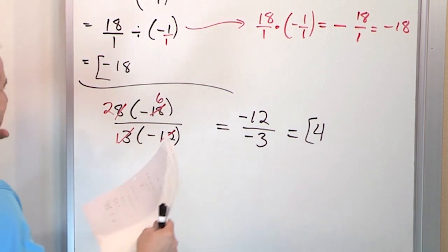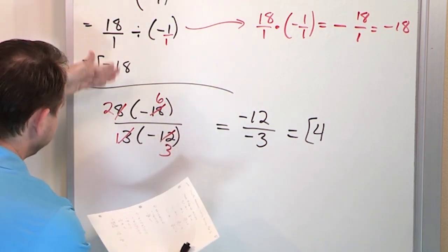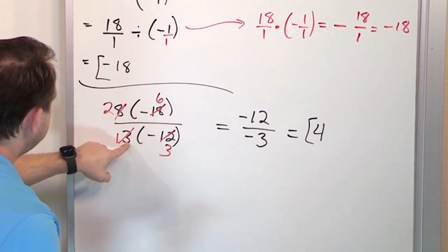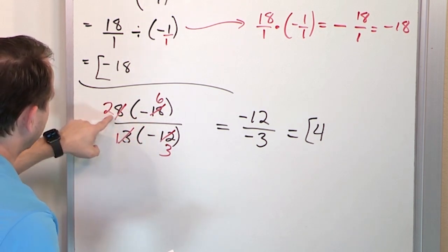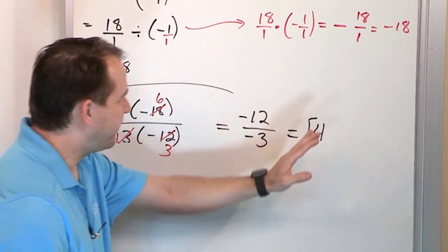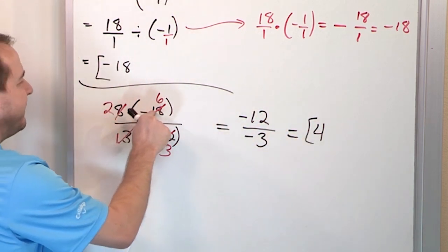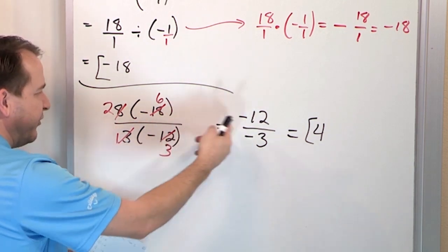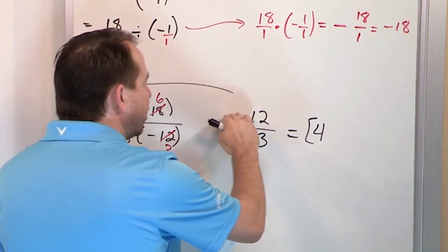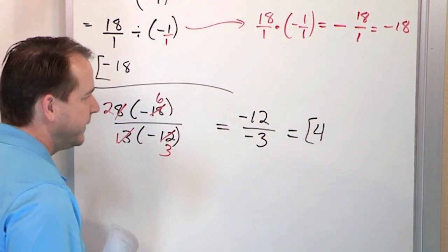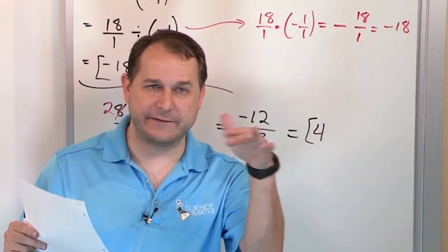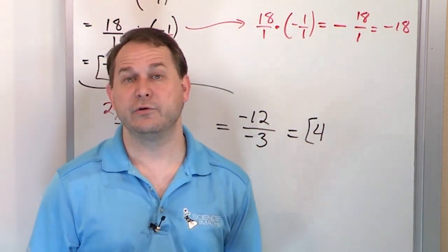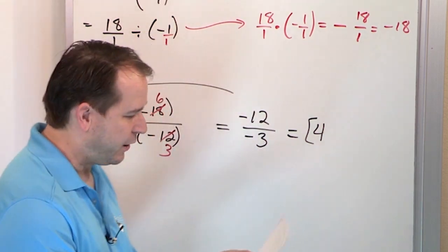What we did was simplify everything first by dividing by common numbers — dividing 3 and 18 by 3, and dividing 8 and 12 by 4. If you had taken 8 times negative 18 directly, then 3 times negative 12 to get negative 36, you'd have a large number divided by negative 36. Simplifying that fraction repeatedly would still give you 4 — the exact same answer no matter how you choose to do it.